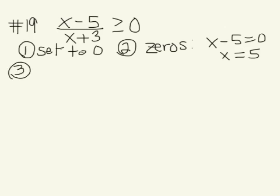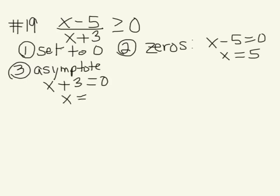The third step we want to do is set your denominator equal to 0, so you are trying to find your vertical asymptotes. So x plus 3 is equal to 0, so x is equal to negative 3.